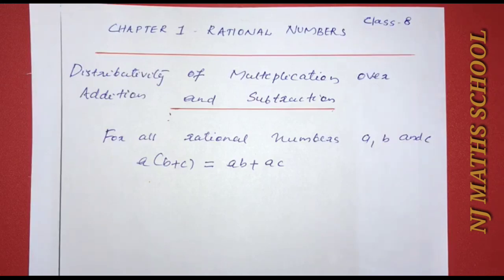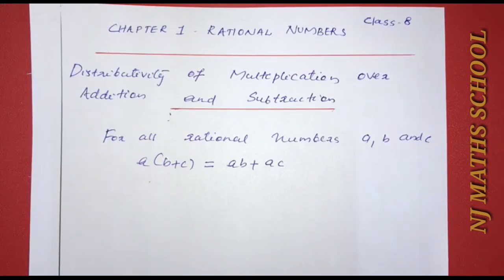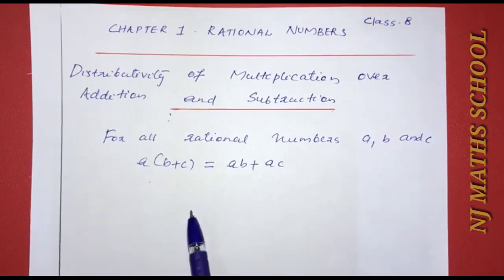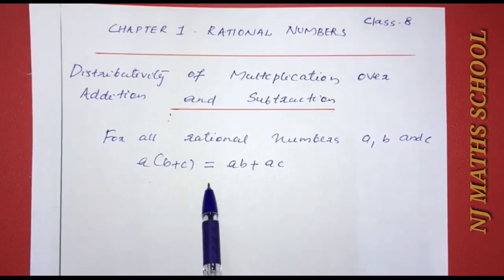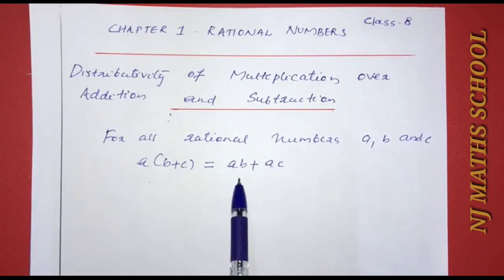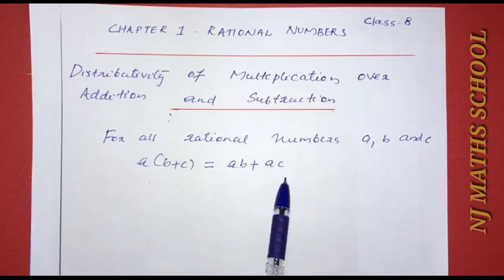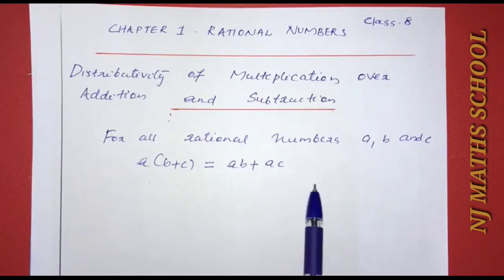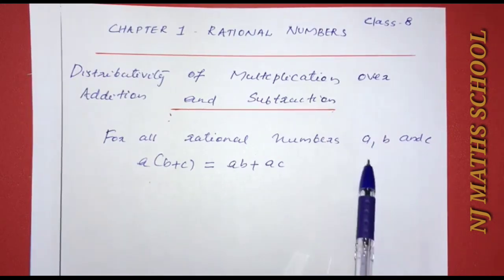Chapter 1: Rational Numbers. We look at the properties of rational numbers. The last property is the distributivity of multiplication over addition. For three rational numbers A, B, and C: A into (B plus C) is equal to AB plus AC.